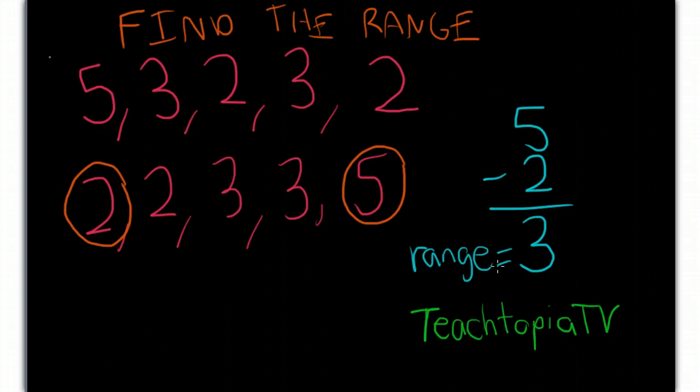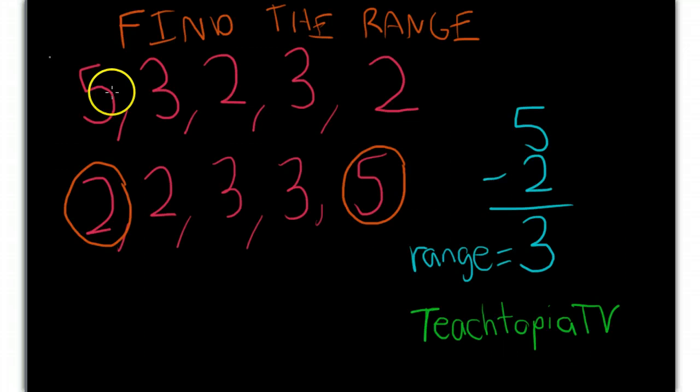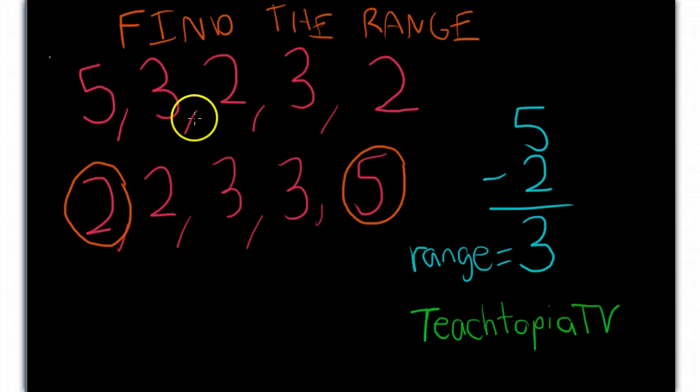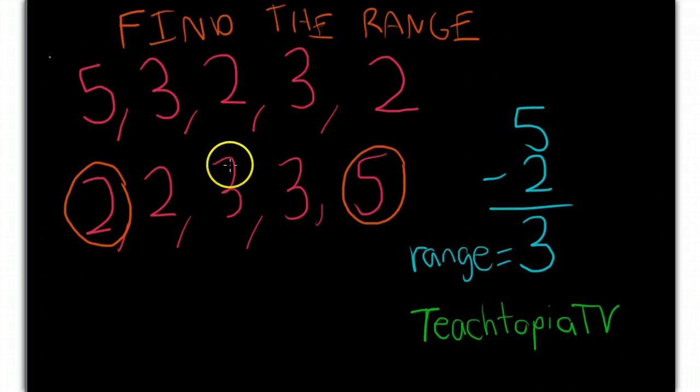Now, there are still a number of ways you get this wrong. The first way you get this wrong is by simply not taking the set of numbers you are given and putting them in order from least to greatest. That is critical whenever you're doing a problem that involves mean, median, mode, and range.